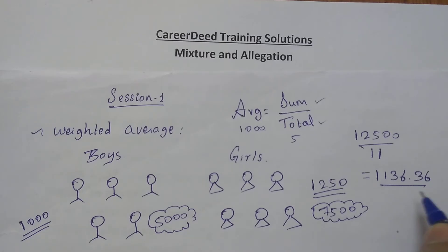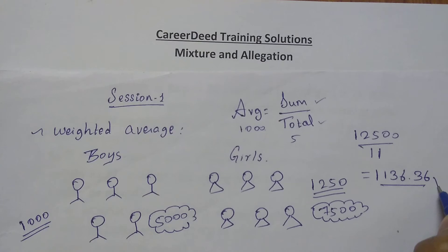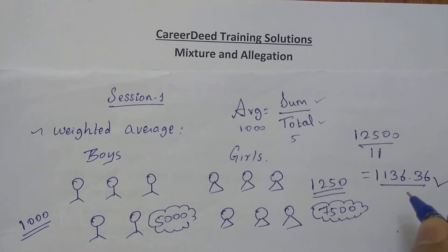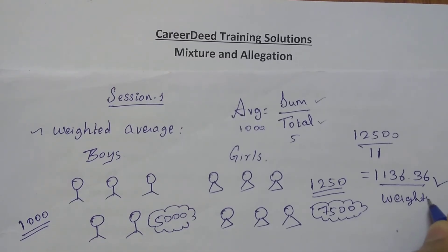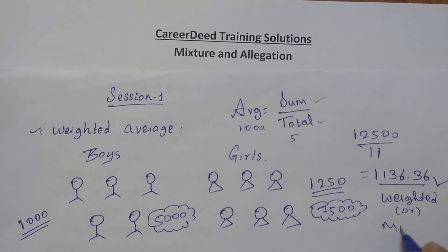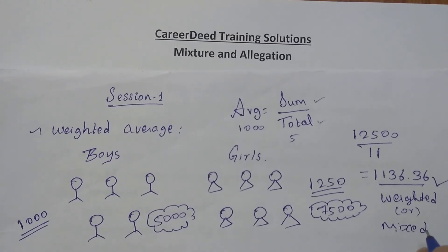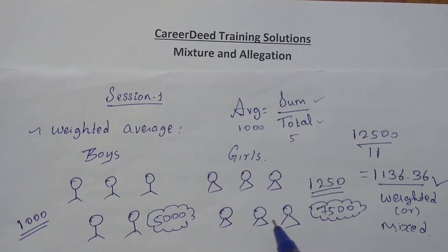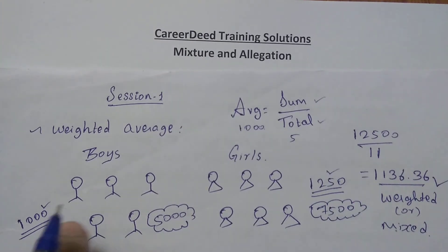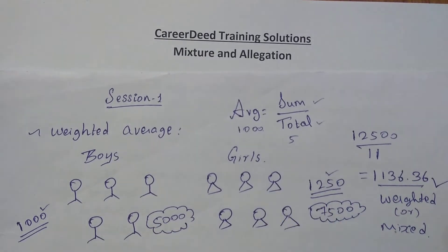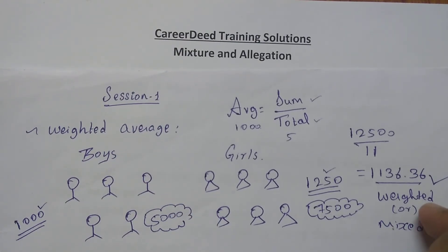So one thousand one hundred and thirty-six point three six is the total average amount spent by the class. I can call this average the weighted average, or mixed average, because this is the average obtained from the averages of two different units — one thousand and one thousand two hundred and fifty — and by combining them I found the new average.